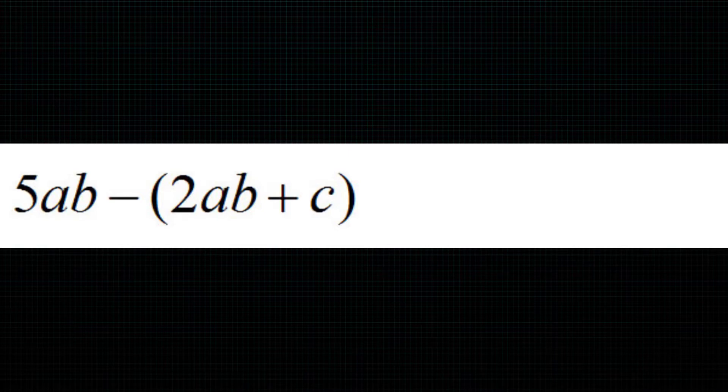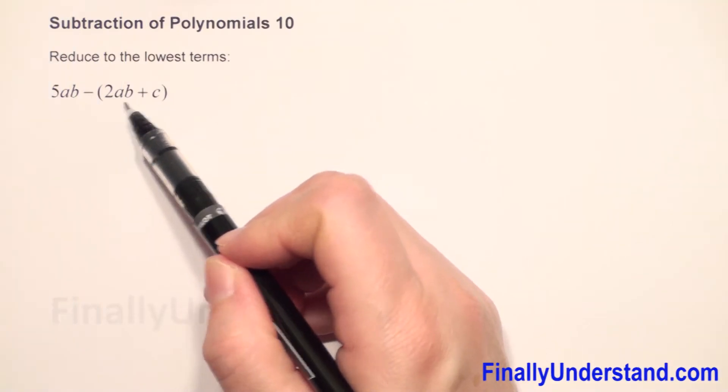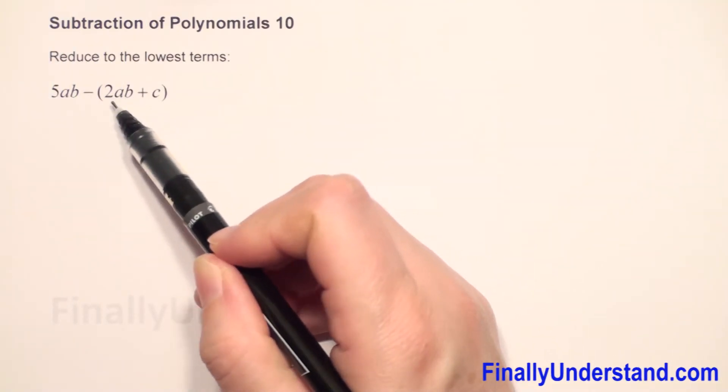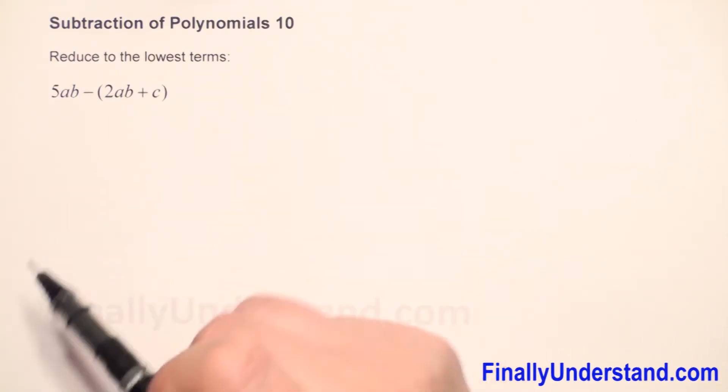We have subtraction of polynomials. We have a monomial and in parentheses we have a binomial because this polynomial has two terms.